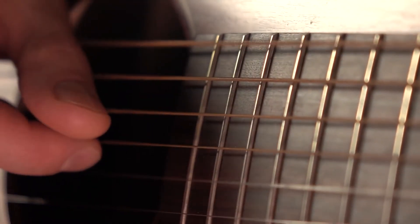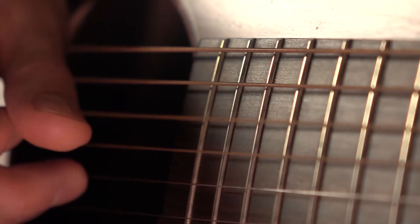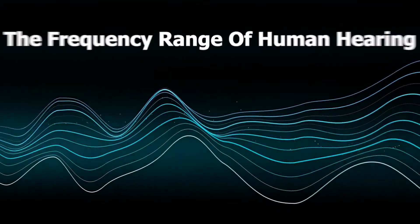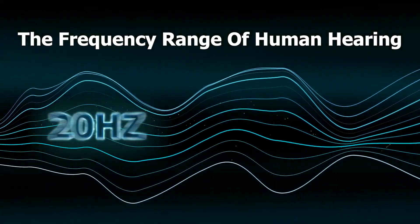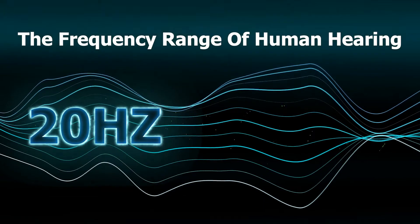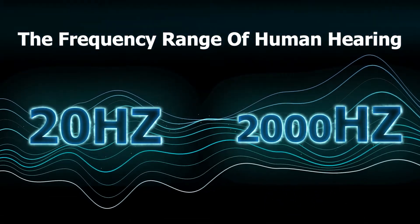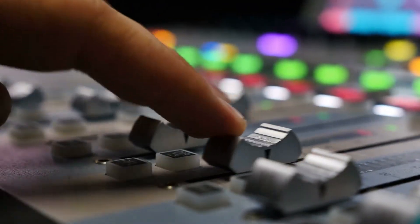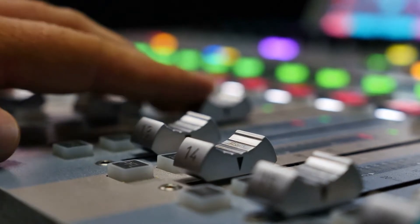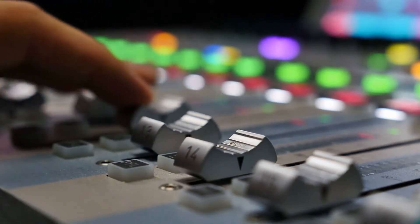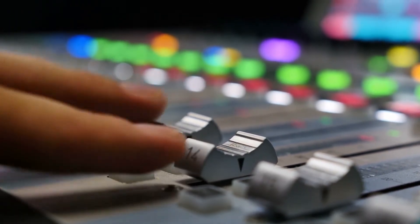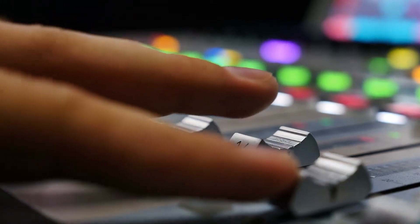We all know that sound is made by vibrations, but this doesn't mean we can hear the sounds made by the vibrations of all objects. The frequency range of human hearing is 20Hz to 20,000Hz. With an equalizer or EQ, we can adjust the volume of different frequency bands to make the instruments sound better.